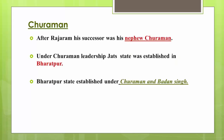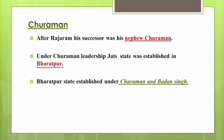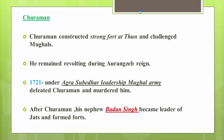After Raja Ram came Churaman, who was his nephew. Under Churaman's leadership, the state of Bharatpur was established — this is a straightforward important question: under whose leadership was Bharatpur state established. The state was established in 1715. He also constructed a strong fort at Thun, also near Bharatpur in Rajasthan, by which he challenged the Mughals.